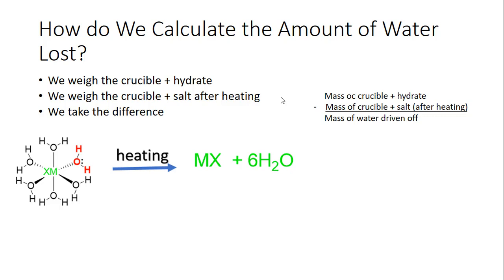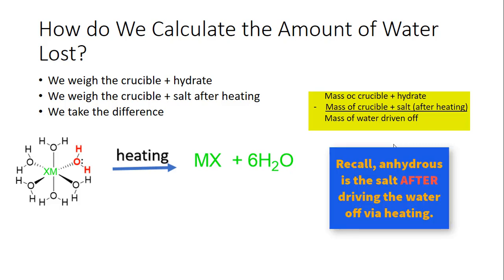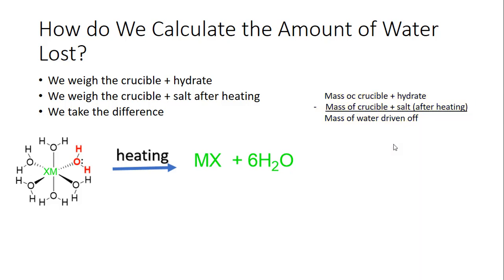How are we going to calculate the amount of water that we lost? We're going to first weigh the crucible plus the hydrate and then we're going to heat that crucible plus hydrate to drive off the water. After the heating we're going to weigh the crucible plus the salt after we heated it and we take the difference. It's that simple. The mass of the crucible plus the hydrate minus the mass of the crucible plus the anhydrous salt after you heat it will give you the mass of water that was driven off. Once you know the mass of water it's a fairly simple exercise to determine what percentage of water was in that hydrate.